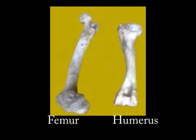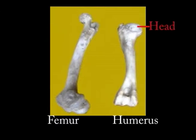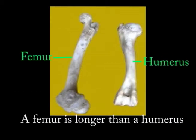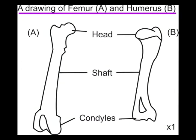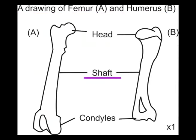How do you identify a femur from a humerus? A femur has got a small, long head; a humerus has got a big, long head. If the two bones are from the same animal, usually the femur is longer than the humerus. A drawing of the femur (A) and the humerus (B) — label the head, shaft, and condyles, then put a magnification.